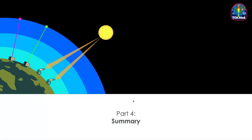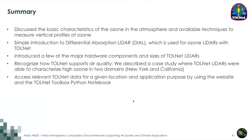In summary, we discussed the basic characteristics of ozone in the atmosphere and the available measurement techniques, including the pros and cons. We introduced the differential absorption lidar, or DIAL, technique used for TOLNet and other trace gas lidars, covering wavelength selection and differential absorption. We introduced major hardware components and various sizes of TOLNet lidars. We described case studies where TOLNet lidars characterized high ozone in New York and California, and walked through accessing relevant TOLNet data using the website and the TOLNet Python notebook.